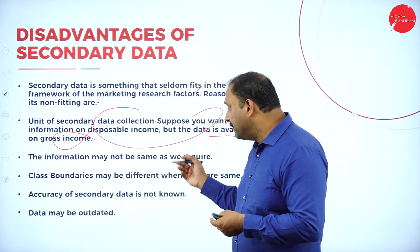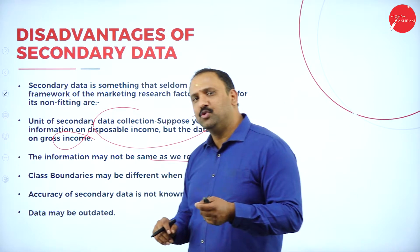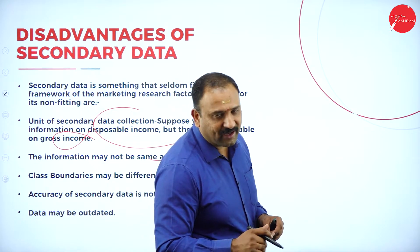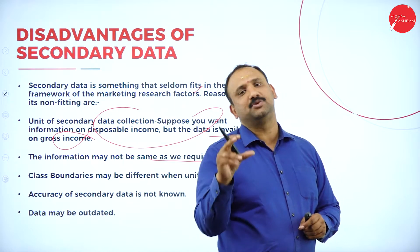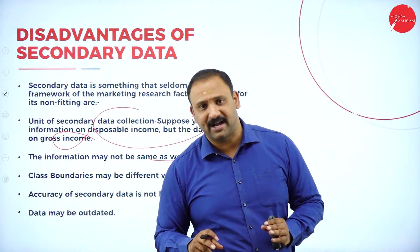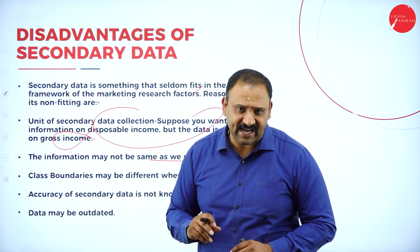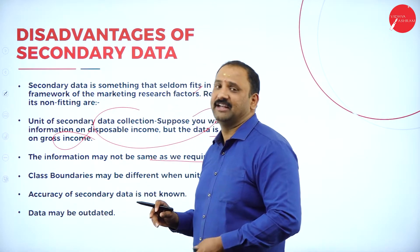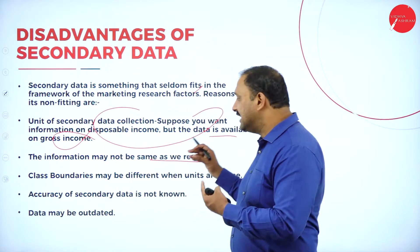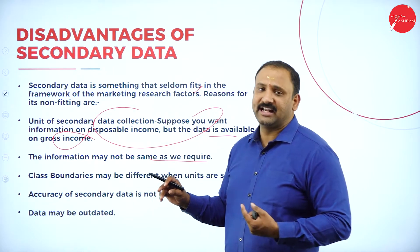The information may not be the same as we require — this is the biggest challenge for every researcher. When you are looking for a particular kind of information and that information is not available, automatically your research will take a backstep. You will not be able to support it and will have to come back and say the research is incomplete. Information that is difficult to find becomes dangerous and challenging in secondary data because it does not support your exact research.